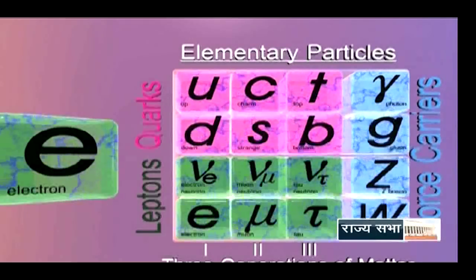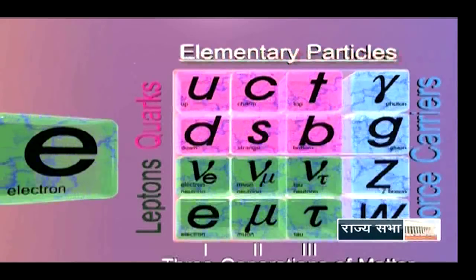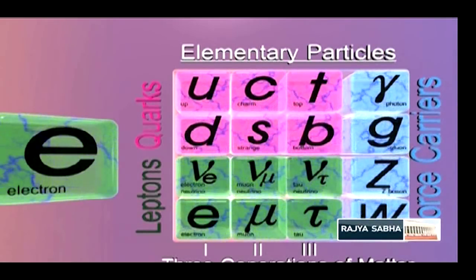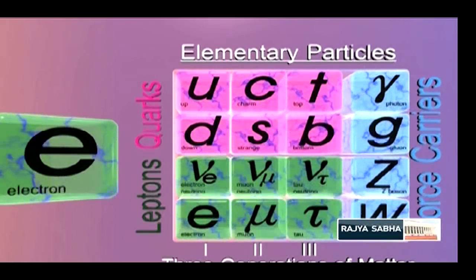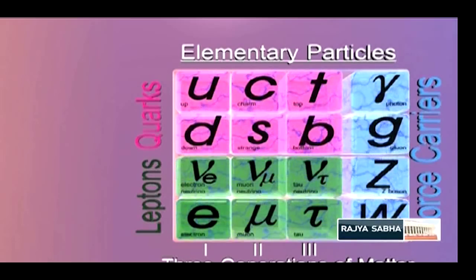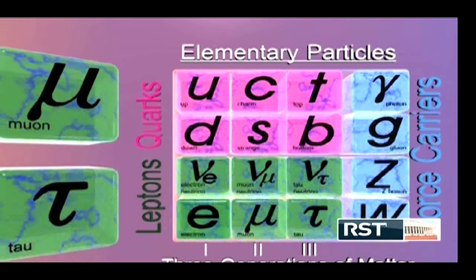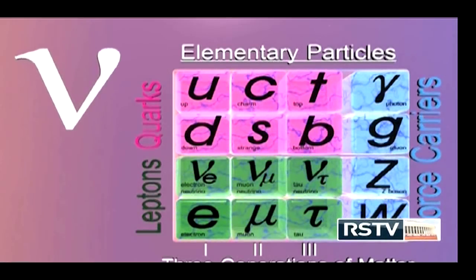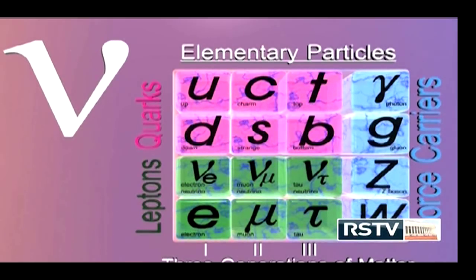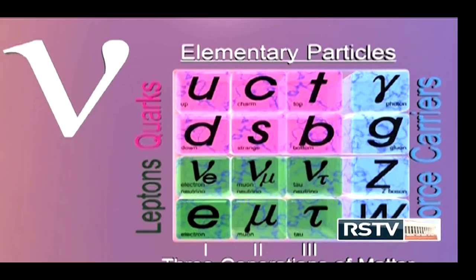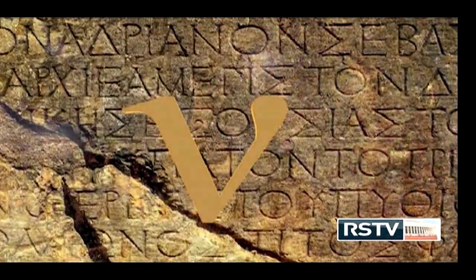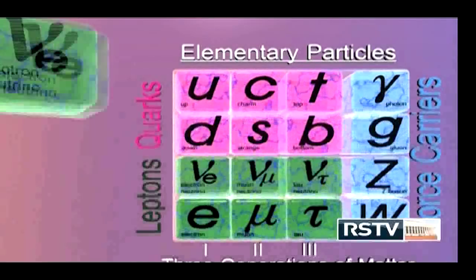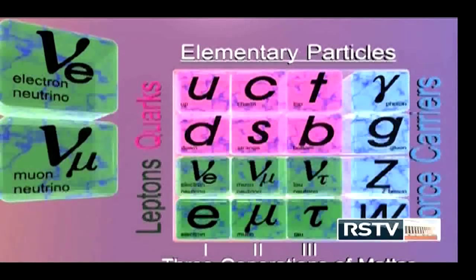An electron is an elementary particle — meaning it cannot be divided further. Scientists have discovered that electrons have two cousins, similar in behavior but heavier: the muon and the tau. Like the electron, neutrinos too are elementary particles. But unlike the electron, which has a negative charge, a neutrino is chargeless or neutral. Neutrinos are denoted by the Greek letter nu. They come in three flavors: namely electron neutrino, muon neutrino, and tau neutrino.